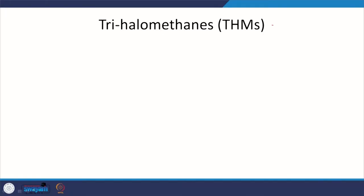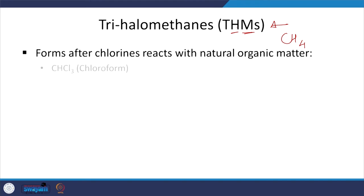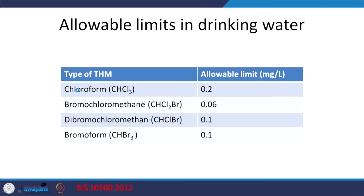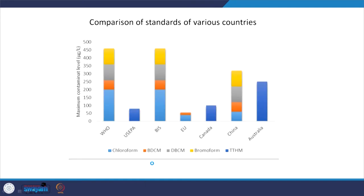Types of DBPs regulated in India are the trihalomethanes — methane with three halogens (e.g., CHCl₃, CHBr₂Cl). India has BIS standards for these. Comparing international standards for DBPs: India adopted the WHO suggestion of 40 ppb, which is the highest limit; US EPA is 50–75 ppb; EU is much lower; Canada and Australia are also pretty low. India's standards are relatively more lax, but as a developing country with many priorities, this is understandable.